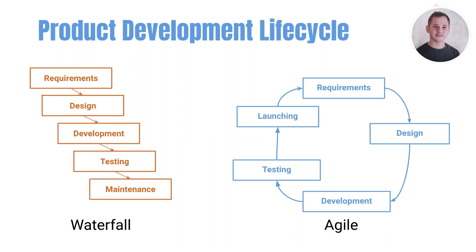Usually in Agile, one cycle of development can be two weeks, four weeks, sometimes one week, but usually it is between one week and four weeks. The difference is just depending on how long a sprint is — you reduce overhead.